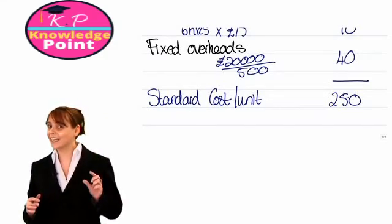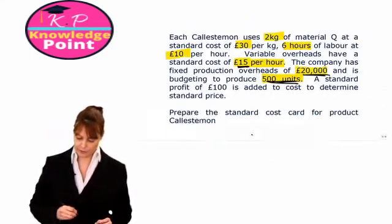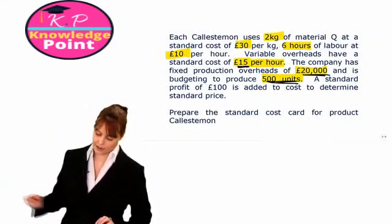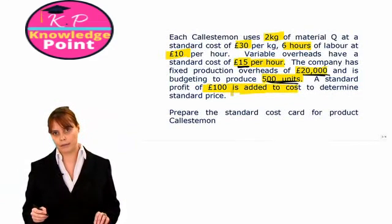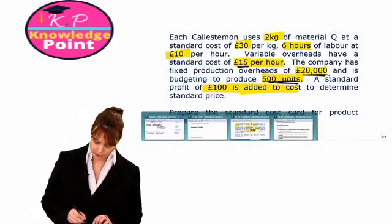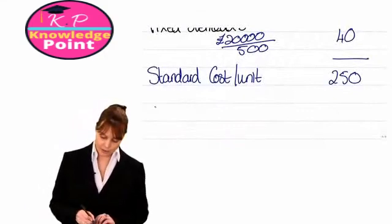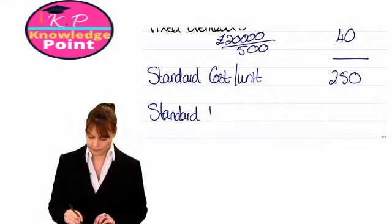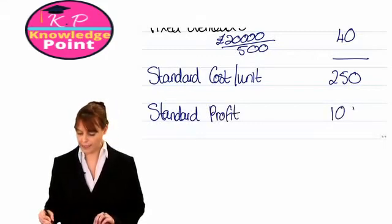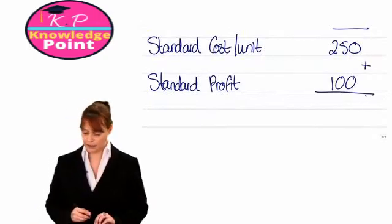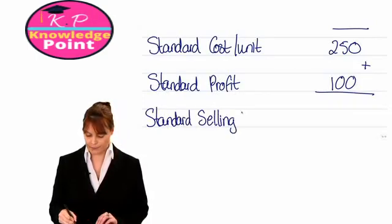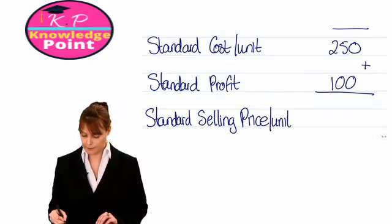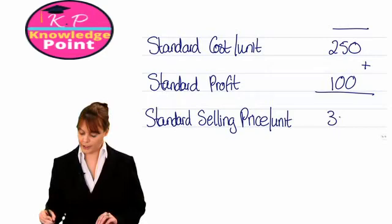Remember there's one last thing we need to do. We were told that a standard profit of 100 pounds is added to cost to determine the selling price. So our standard profit is 100 pounds, which we add on to calculate our standard selling price per unit of 350 pounds. And that's our standard cost card complete.